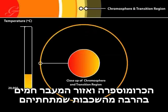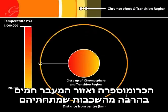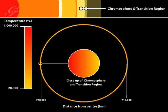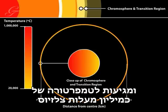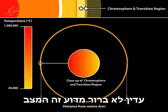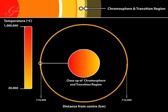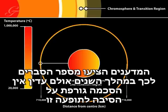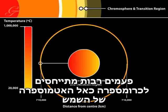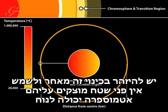The chromosphere and the transition region are much hotter than the layers underneath, reaching about one million degrees centigrade. It is still a puzzle why this should be so. Scientists have offered a number of explanations over the years, but there is still no general agreement on what causes this phenomenon. The chromosphere is often likened to the Sun's atmosphere, but this description should be used with caution as the Sun does not have a hard surface for an atmosphere to sit above.